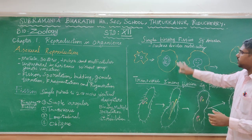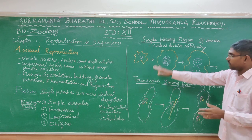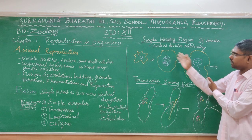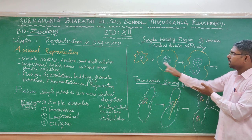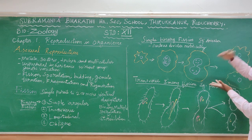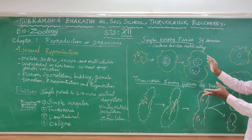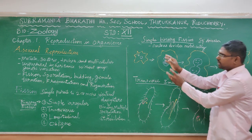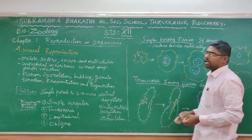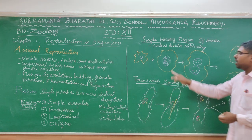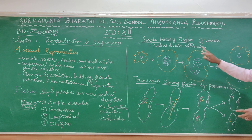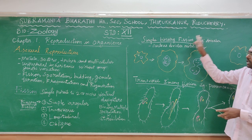First is Simple Irregular Binary Fission. In this type, the example organism is Amoeba. The division is irregular — not transverse or longitudinal. It is irregular in plane. The nucleus and cytoplasm divide, and the two daughter Amoebae are formed. This is Simple Irregular Binary Fission.